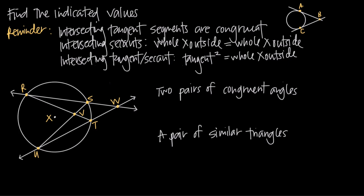In other words, segment AB is going to be congruent to segment BC. The distance between the point of tangency and the point of intersection on both tangent line segments are going to be equal to one another.